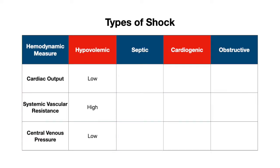Looking at our three hemodynamic measures in hypovolemic shock: cardiac output is going to be low, systemic vascular resistance will be high in order to compensate for the decreased cardiac output, and central venous pressure is going to be low because of the loss of volume.